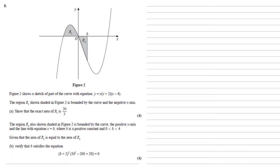Figure 2 shows a sketch of part of the curve with equation y equals x times x plus 2 times x minus 4. The region R1, shown shaded in figure 2, is bounded by the curve and the negative x axis. For part A we need to show that the exact area of R1 is 20 over 3.